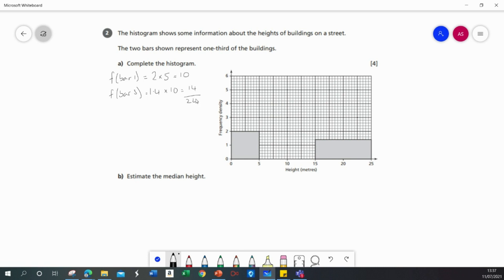So the total buildings represented by these two bars are 24 and that represents one-third of the buildings. So the frequency of the second bar will be two-thirds, or 24 multiplied by 2, which is 48.